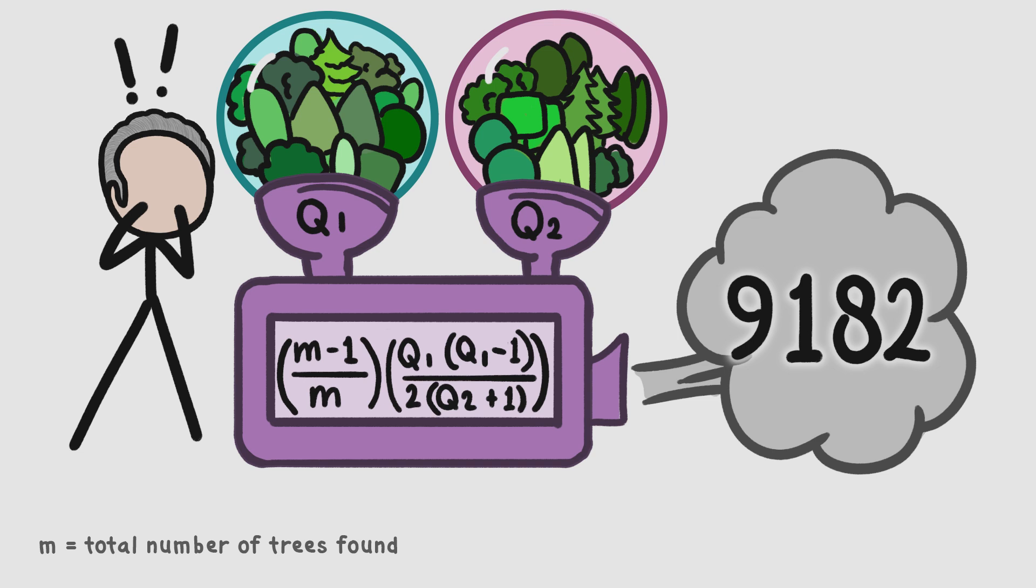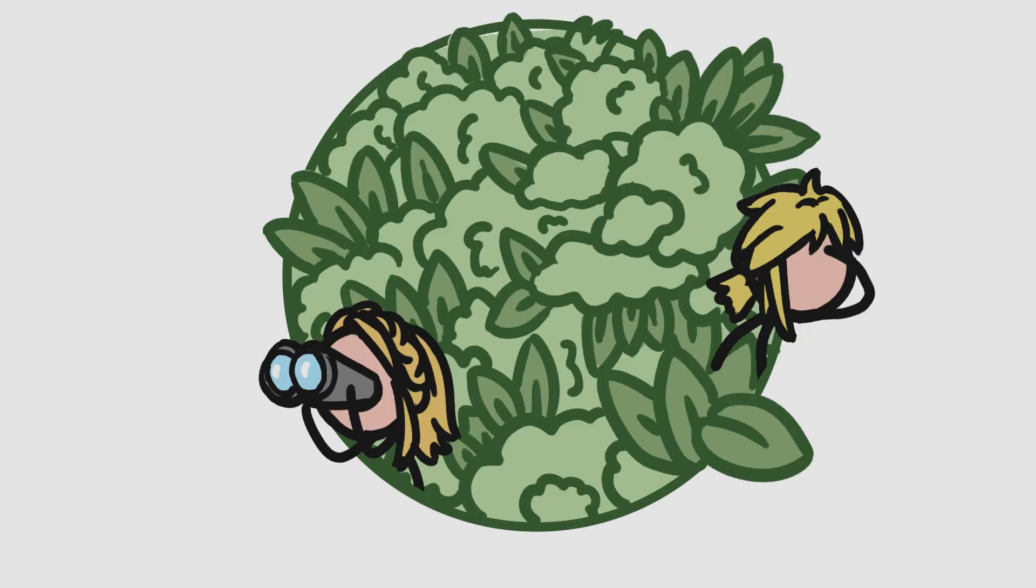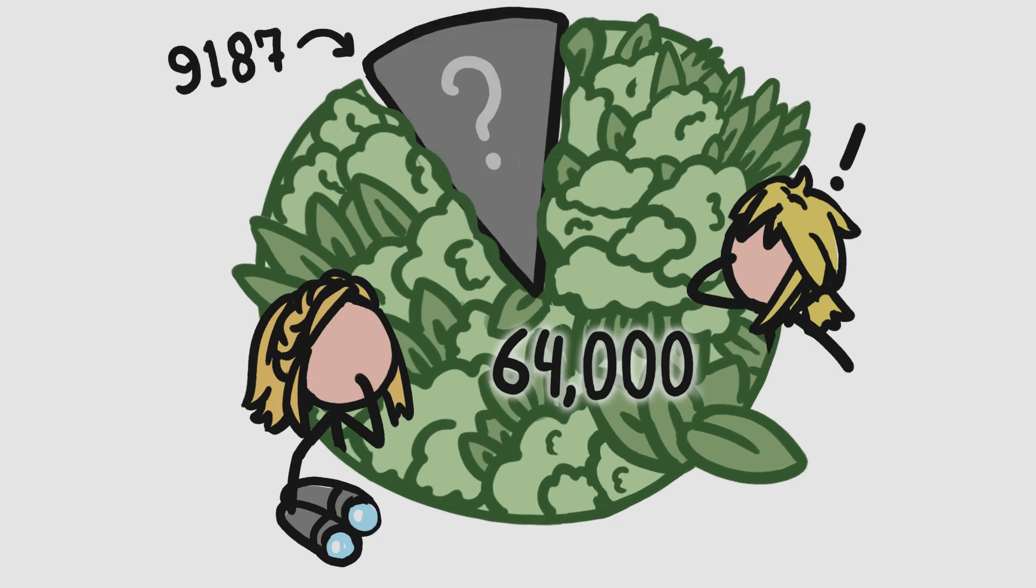Which seems like a heck of a lot. I mean, in the centuries we've spent botanizing all over the world, we've identified about 64,000 tree species. Have we really missed an eighth of what's out there?